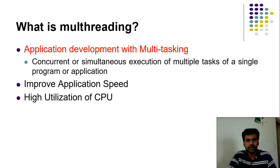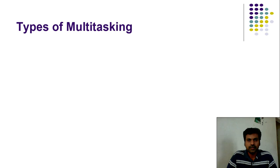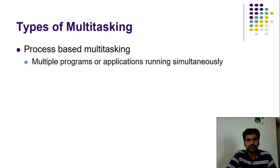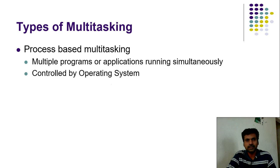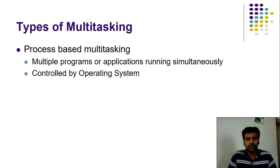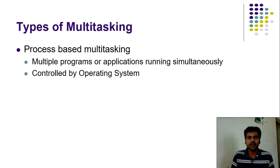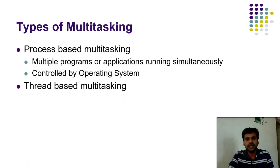We have two types of multitasking. First is process-based multitasking, where multiple programs are running in your system simultaneously, which is controlled by your operating system. For example, on a laptop you can open a browser, an audio player, a video player, PowerPoint, Adobe Acrobat Reader, or an IDE all at the same time. This is called process-based multitasking, and it is controlled by the operating system.